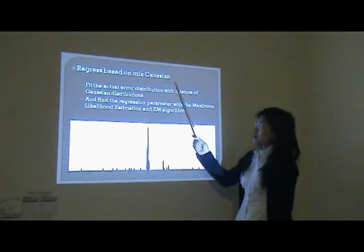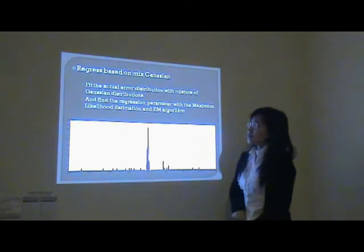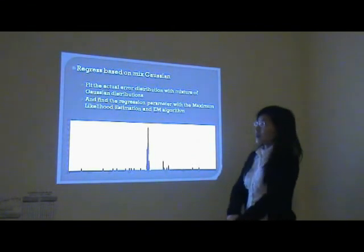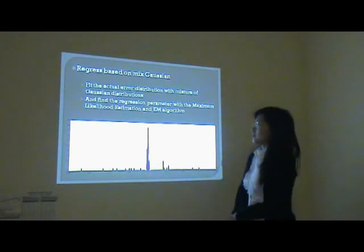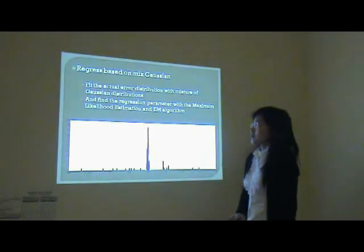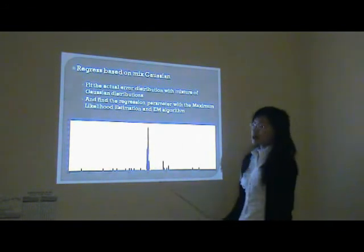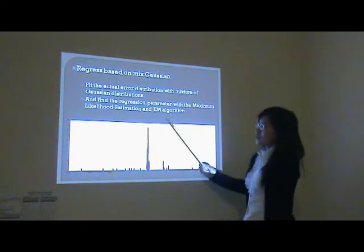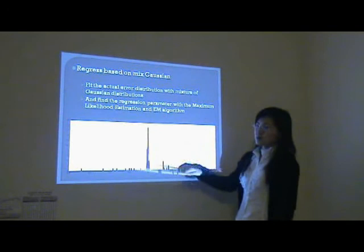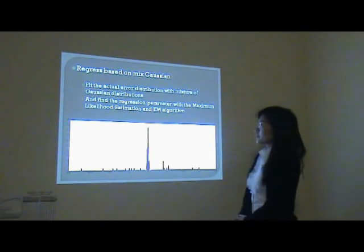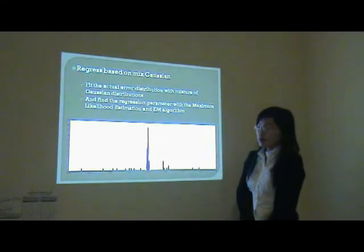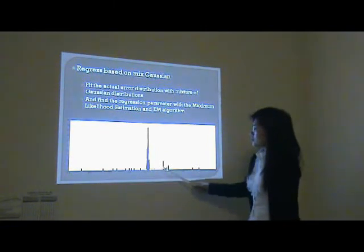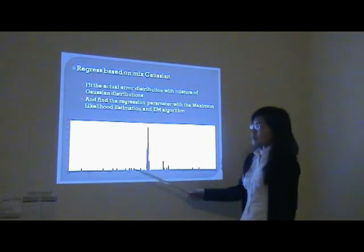Regression based on mixed Gaussian. It is well known that classical linear regression is based on the assumption of Gaussian error. But in fact, when noises are large, the Gaussian error assumption doesn't hold. So, I fit the actual error distribution with a mixture of Gaussian distributions and constrain the mixture of Gaussian distributions with the same mean values. Then, I find the regression parameters with maximum likelihood estimation and the EM algorithm. The mixed Gaussian model can fit the error distribution very well.